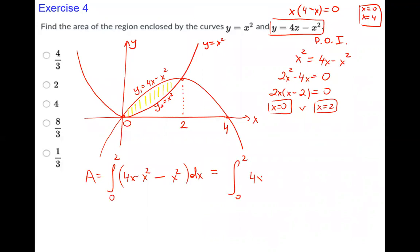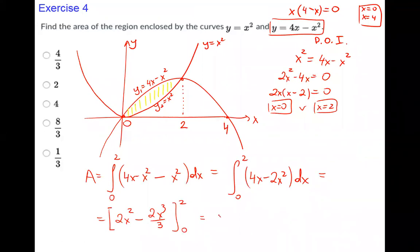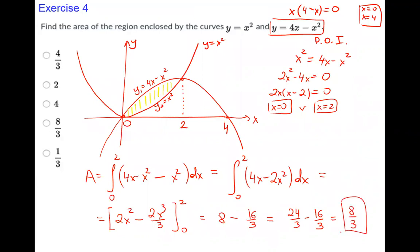Integrating from 0 to 2: (4x − x²) − x² = 4x − 2x². The integral gives 2x² − (2x³/3) from 0 to 2. Substituting 2: 2(4) − 2(8)/3 = 8 − 16/3 = 24/3 − 16/3 = 8/3. The area is 8/3.